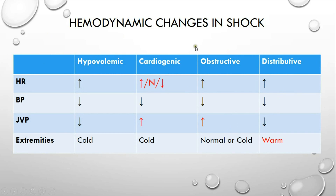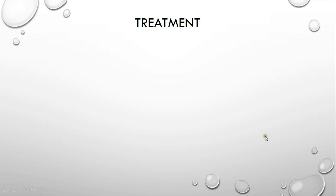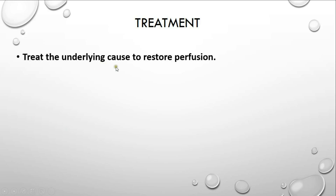The hemodynamic changes associated with the different types of shock: the hallmark is a decrease in blood pressure in all types of shock. Heart rate is usually increased in all types except cardiogenic shock, where it can be normal or decreased. JVP is increased only in cardiogenic and obstructive shock, whereas it is decreased in hypovolemic and distributive shock. Extremities are cold in all types except distributive shock, which presents with warm extremities due to peripheral vasodilation and peripheral pooling of blood.